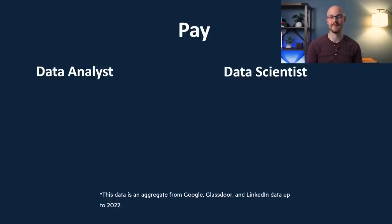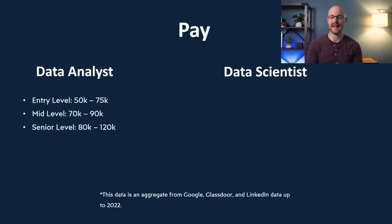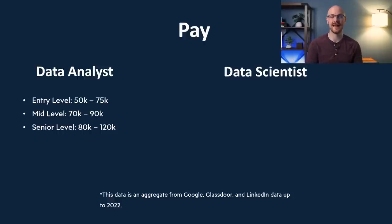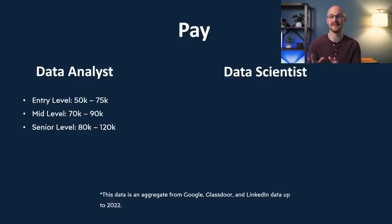Lastly, let's take a look at pay for both roles. For an entry-level data analyst, you're looking at anywhere from $50,000 to $75,000. As a mid-level analyst, anywhere from $70,000 to $90,000. And as a senior-level data analyst, anywhere from $80,000 to $120,000. This is for the United States — if you're in another country you may want to check your averages there. All these averages are very dependent on several factors including years of experience, education, and where you live.